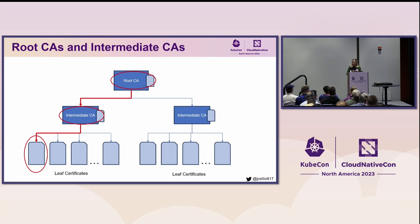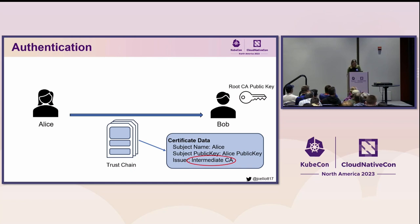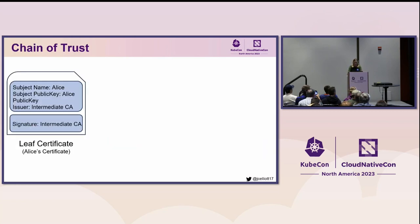Let's go back to Alice and Bob. Alice has shared her trust chain with Bob. Bob is inspecting her certificate and sees that it was signed by an intermediate CA. Bob only implicitly trusts the root CA — he only has the root CA's public key. Looking at Alice's leaf certificate, we can see the subject name is Alice, along with her public key, and it was issued and signed by the intermediate CA using the intermediate CA's private key. Bob doesn't implicitly trust the intermediate CA's public key, which he would need to verify this signature, so he needs to look at the intermediate certificate.